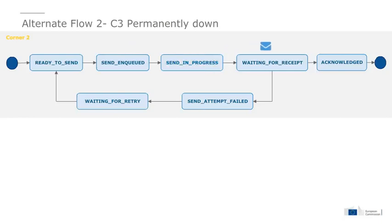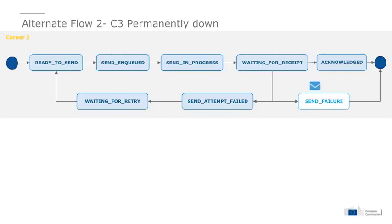The number of times it goes through this process is defined in the PMODE file. Now, in the situation where C3 is permanently unavailable, the message will migrate from waiting for receipt to send failure, because at this point it would have exhausted the set amount of retries that's been configured in the PMODE file. When the message is in send failure, the message and payload may be kept or deleted depending on the configuration in the DomiBus properties file.